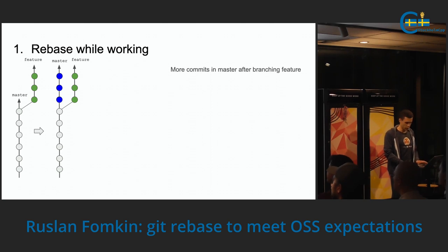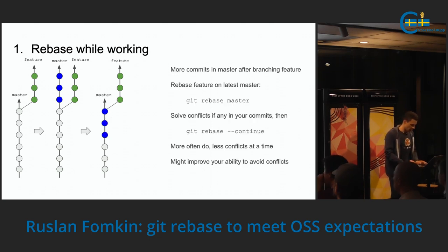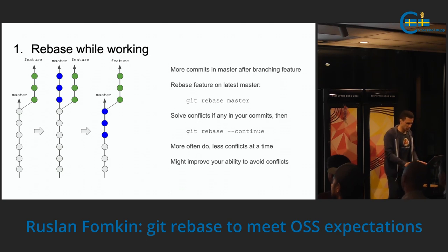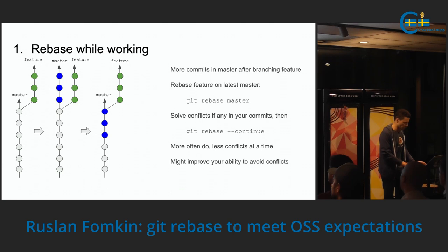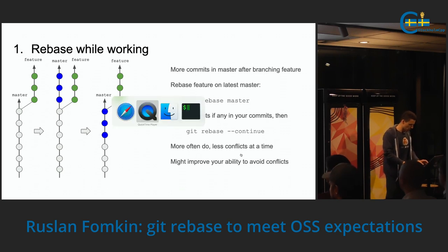A feature branch was started from the master branch. At some point, some other developers completed their work — as shown here with three blue dots, three different commits which were completed and merged to master. So now it's time to move your feature onto the latest master and do the rebase. This is done with git rebase on master branch. If there are any conflicts, they need to be resolved and you can do continue. At the end you have your feature branch on top of the master branch and you can continue to work or finalize and create a pull request. I prefer to do this rebase more often because then there are fewer merge conflicts at a time.